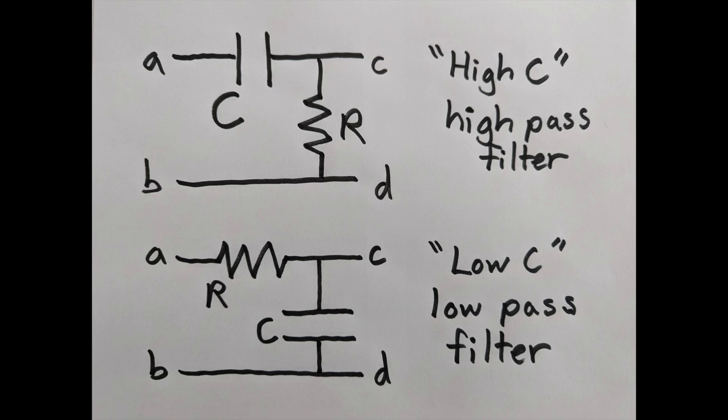In the high C filter, if you go to high frequency, the capacitor is basically a wire. You've connected A to C, so your output matches your input, so high frequencies are getting passed through. At low frequencies, the capacitor is basically a gap, so nothing is going to get through.